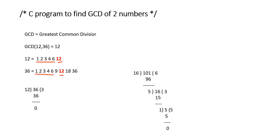There is another logic to find out the GCD of 2 numbers. First of all, we divide the largest number with the smallest number. Here, when 36 is divided by 12, we get a remainder of 0. When we get remainder 0, then we can say that the divisor is the GCD value. So 12 is the GCD value.